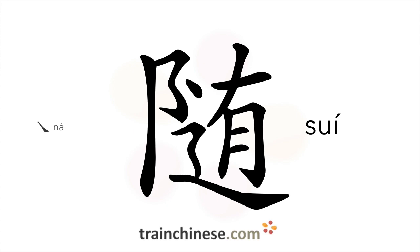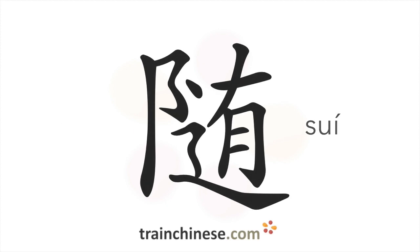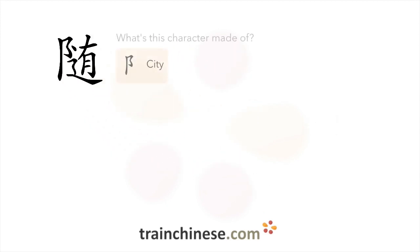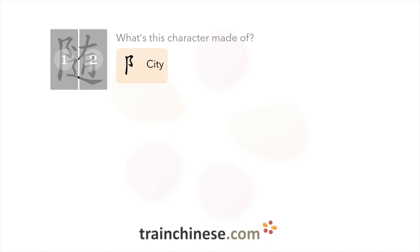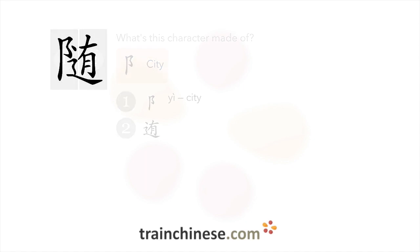So, what components is this character made up of? The radical means city or place. Let's look at some examples.